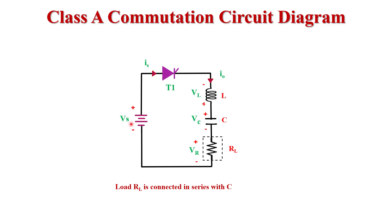Here Vs is the supply voltage, Is is the supply current, T is the thyristor, LC are the commutating components, I0 is the output current, and R is the load resistance. The value of load resistance is fixed; we only choose a proper value of L and C to make the system underdamped.